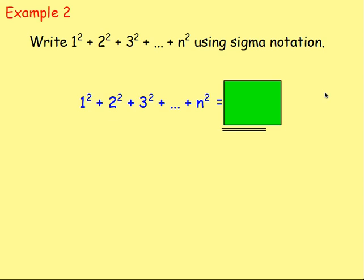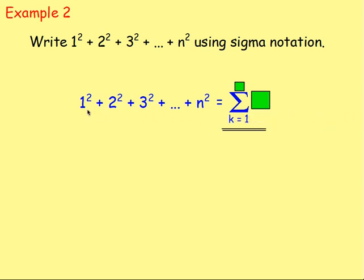Example two: write 1² + 2² + 3² + ... + n² using sigma notation. We know we're going to bring in sigma. We have one and we're squaring it, so we start with k as one. When you sub one in, you square it — so you take whatever k is and square it. It's going to be the sum of k squared. We sub in one and square it, then two, then three, then four, all the way up to n. So at the top the last value is n. That is it written using sigma notation.